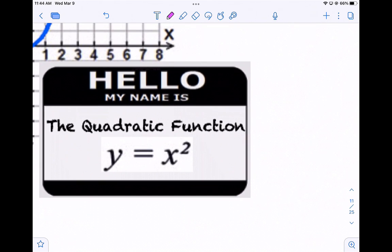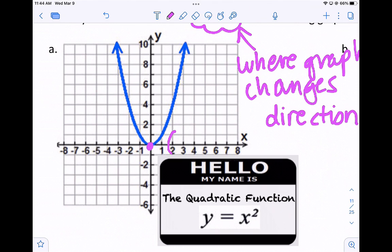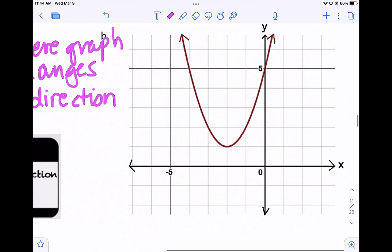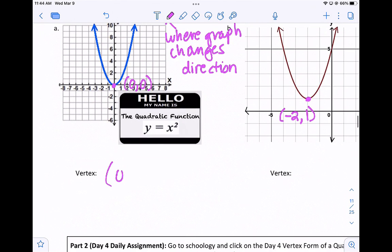So, again, here's the parent function, y equals x squared. And here, the vertex is at 0, 0 for the parent function. If we take a look at the shifted function right here, the vertex is negative 2, 1, because we go left 2 and up 1. So if you remember, 0, 0, negative 2, 1.